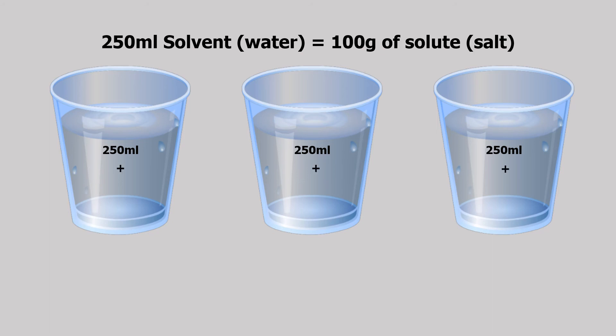The first glass will have 100 grams of salt. The second one will have 50 grams. And the last glass will have 120 grams. Now, can you identify which of the glasses represents each type of solution?